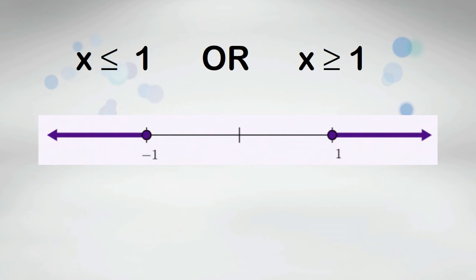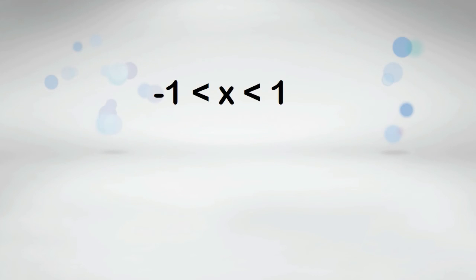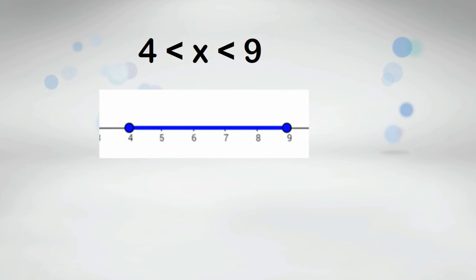If the inequality has or, the graph will point in two different directions. If the variable is in the middle of two inequalities, the graph will be used between the two points. For example, 4 is less than x which is less than 9. Let's look at some more examples.